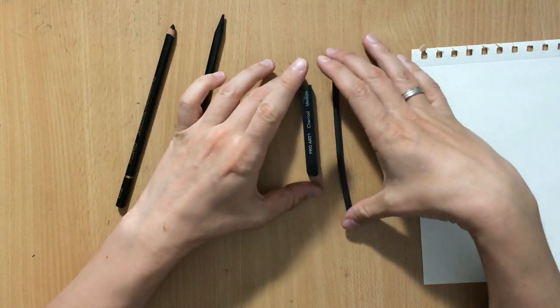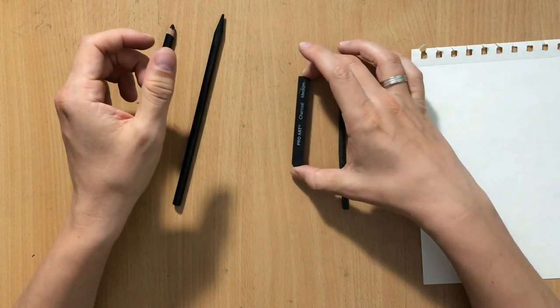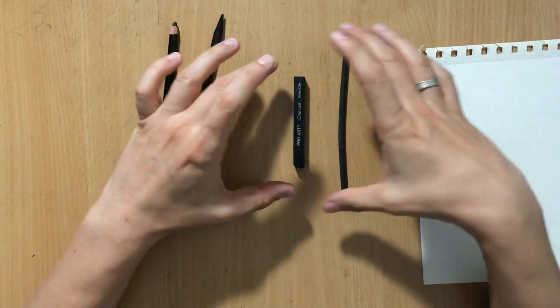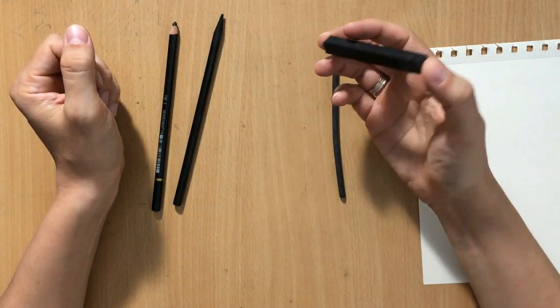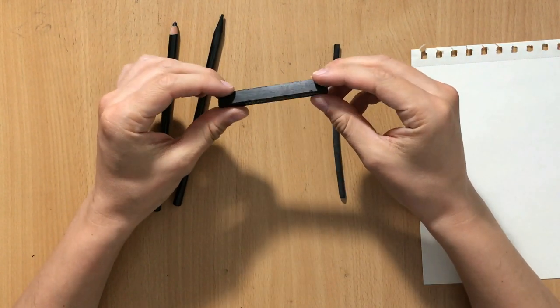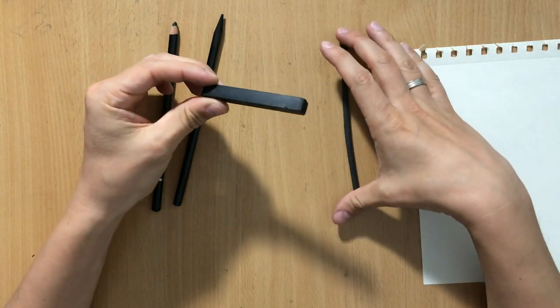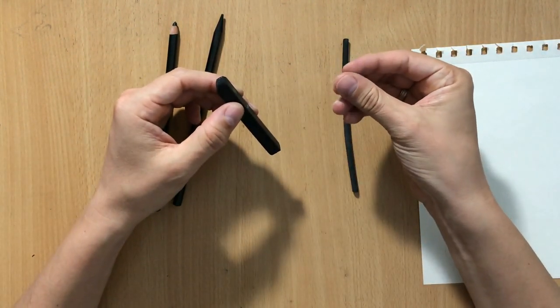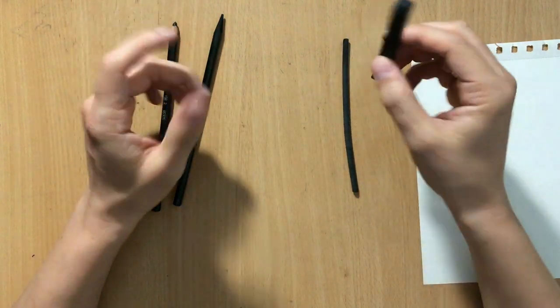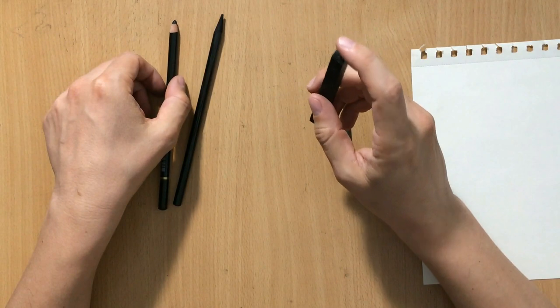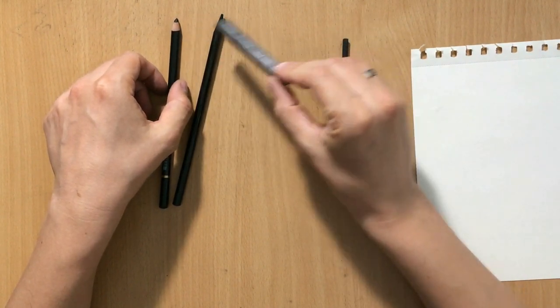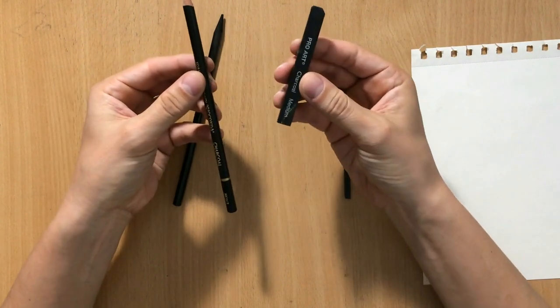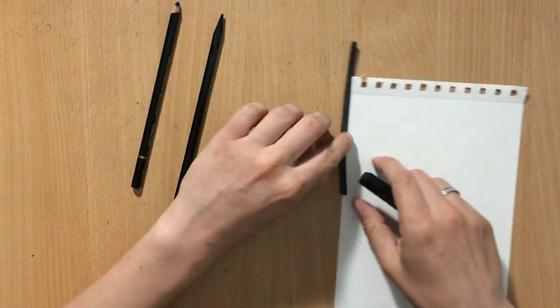As for sticks, we have compressed charcoal sticks and vine charcoal sticks. The compressed charcoal stick is made of a different kind of material—not natural charcoal. It's a bit darker and tends to stick to the paper surface more, as you'll see. The charcoal in pencils is made of pretty much the same material as compressed charcoal sticks, so they're all fairly dark.